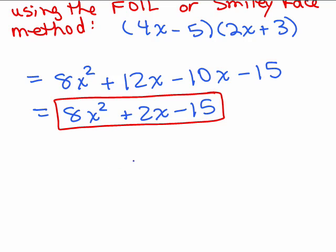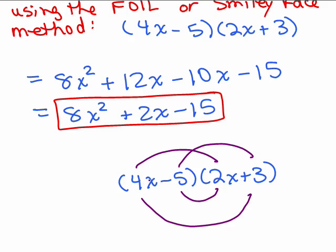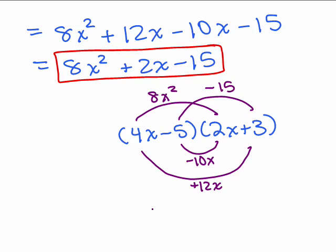Now let's do the smiley face method on 4x minus 5 times 2x plus 3. Draw the smiley face, then fill in: 4x times 2x is 8x squared, negative 5 times 3 is negative 15, negative 5 times 2x is negative 10x, and 4x times 3 is plus 12x. Bring down 8x squared, add the like terms negative 10x and 12x to get plus 2x, and bring down the constant negative 15. Same answer.